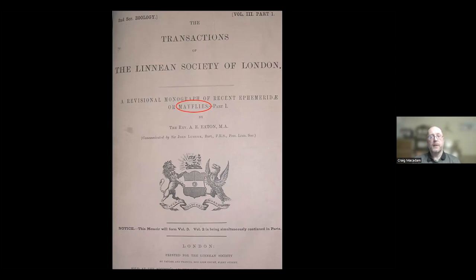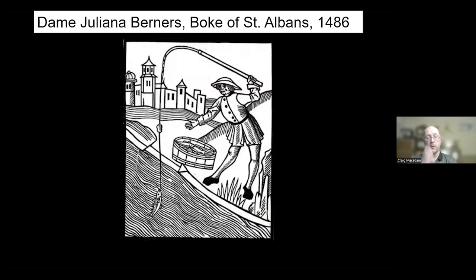Mayflies aren't just the preserve of entomologists — they've been known by anglers for many years. In 1486, Juliana Berners, the abbess of St Albans, wrote the Treatise of Fishing with an Angle, describing artificial flies, the materials used to make them, and giving a fly for every month of the year. We can actually hazard a guess at which species she was talking about from her descriptions.